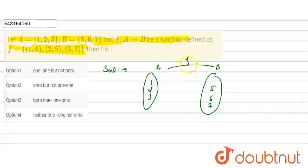We have a function defined. In this function, what have we done? 1 maps to 6 as the image. So 1 is related to 6.